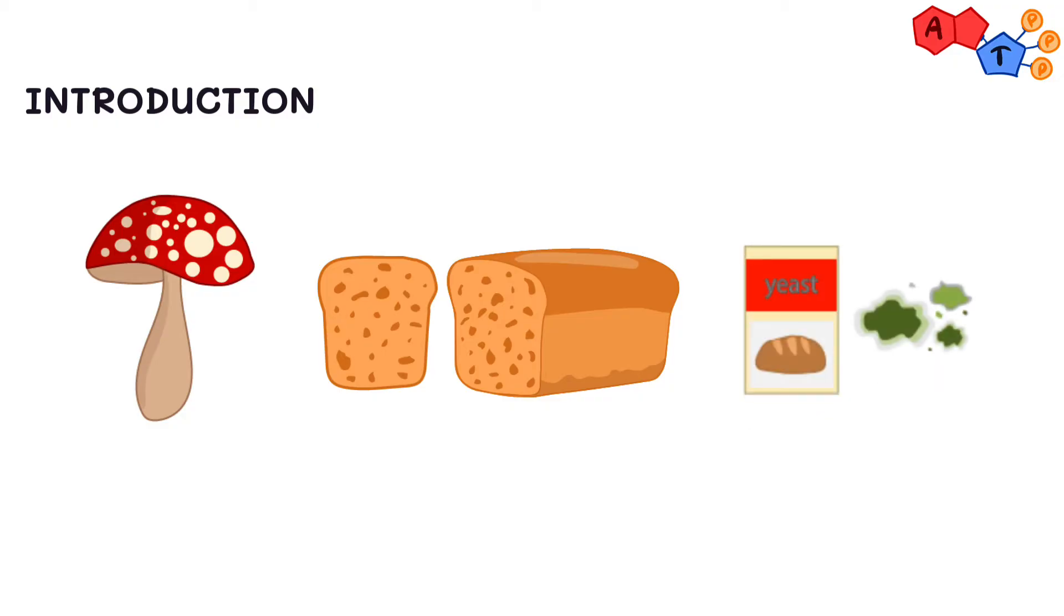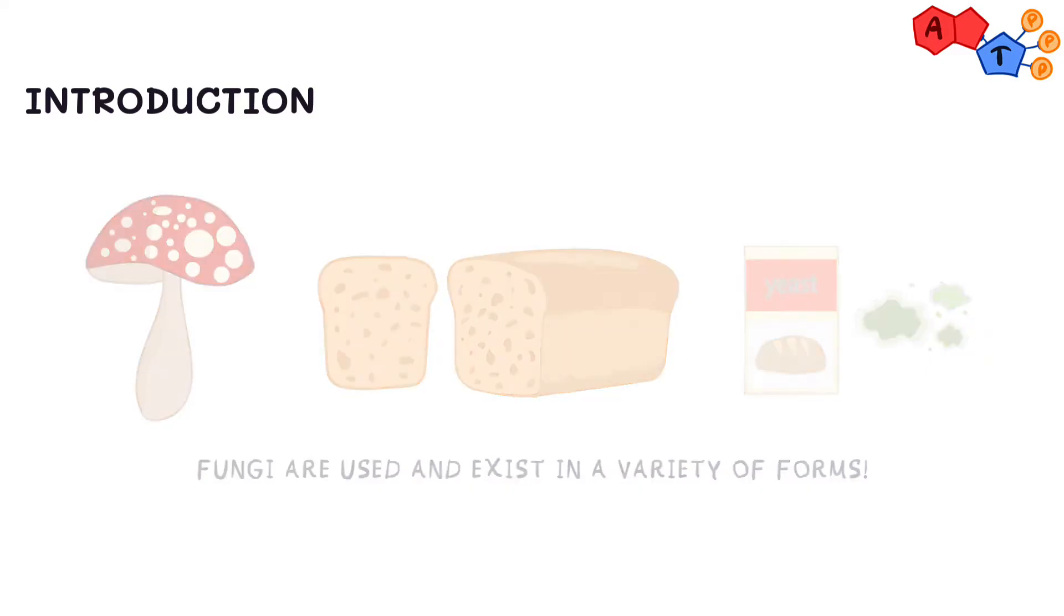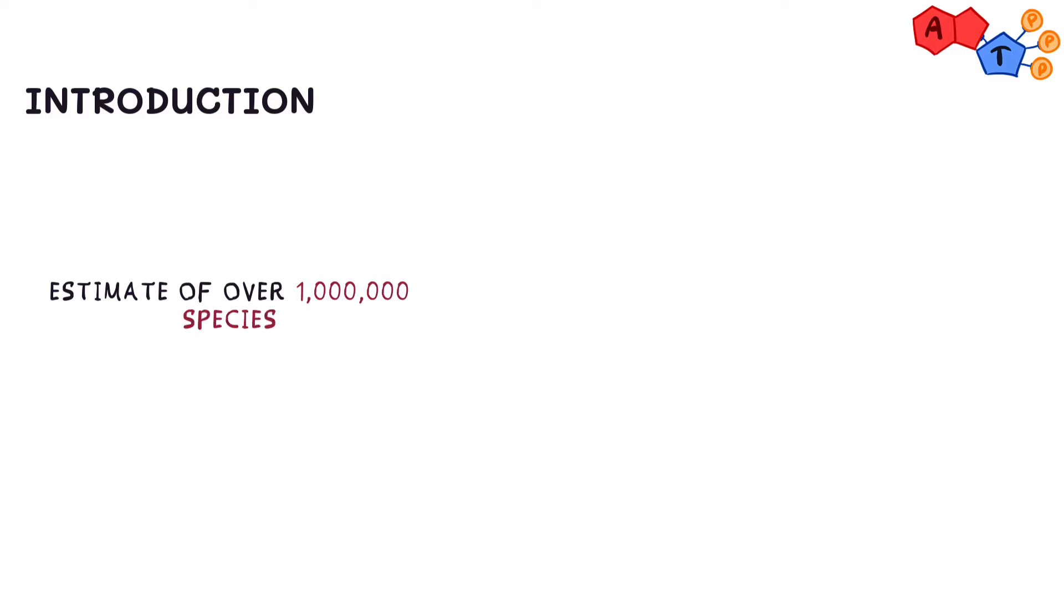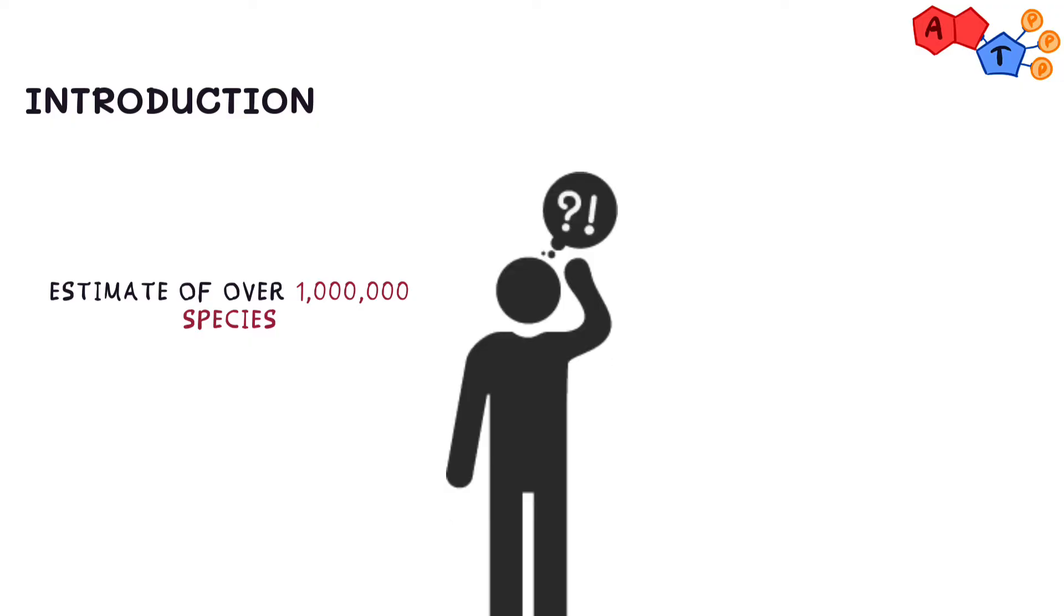Assalamu alaikum everyone, welcome back to another ATP video. Let's hop right in. From mushrooms and bread to yeast and mold, fungi exist and are used in a variety of different forms. What makes this kingdom so special? It's estimated that over a million different species of fungi exist, many of which we haven't even discovered yet. These little creatures